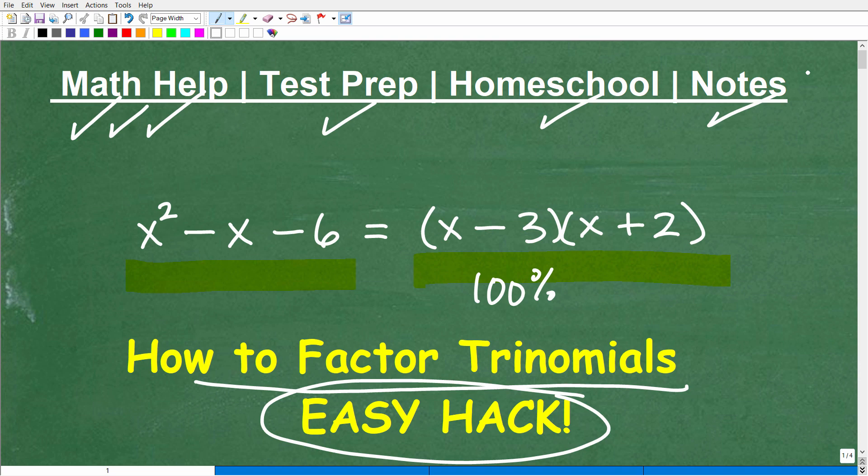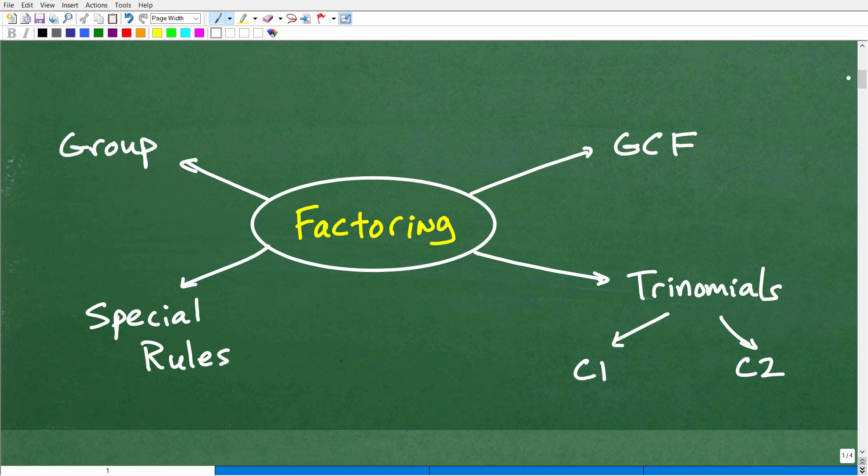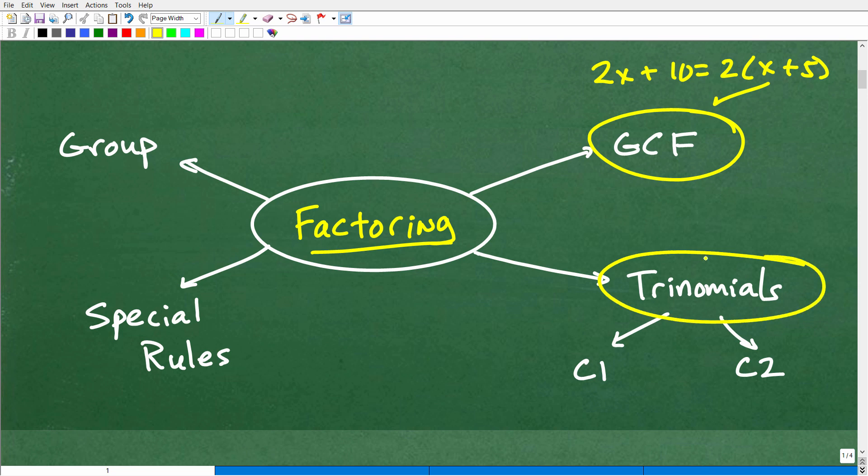Let's go ahead and get going and talk about how to factor trinomials. But let me narrow this down a bit, and let's make sure we understand the world of factoring. In algebra, factoring is a huge topic broken up into different skills. The first skill you need to understand is how to factor the greatest common factor. I have videos on all this. For example, 2x + 10 = 2(x + 5). That's an example of what I'm talking about. Once you learn this, you move on to trinomials, and that's what this video is about.